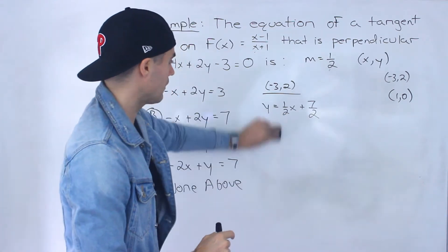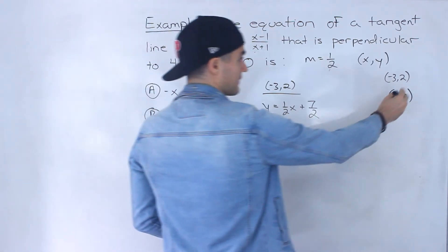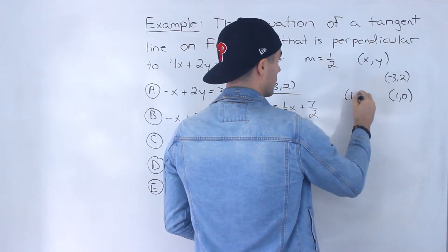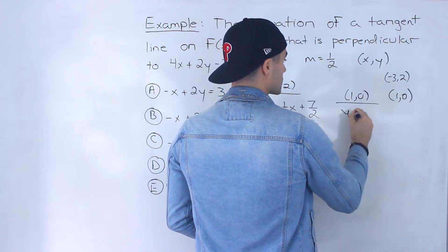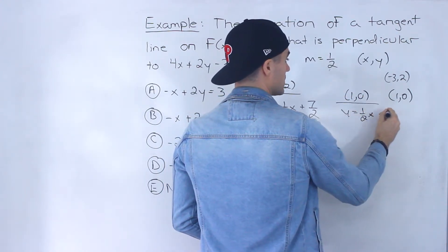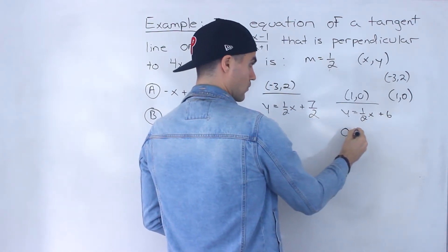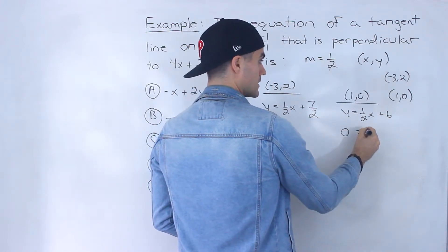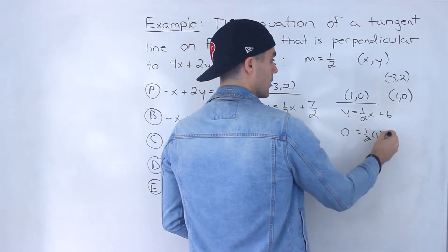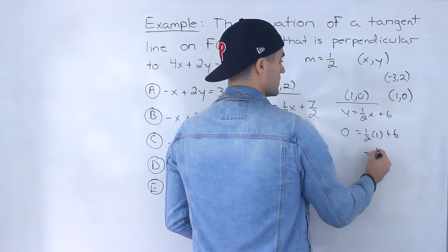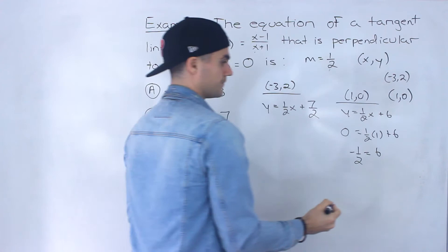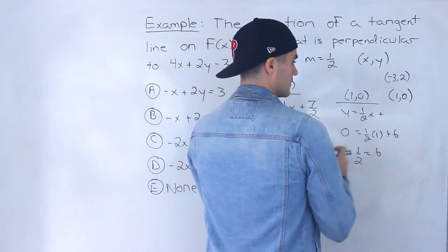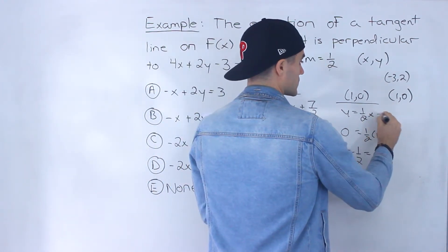For the other equation at the point (1, 0): y equals 1 over 2 x plus b. Plug in 0 for y and 1 for x, so b equals negative 1 over 2. The other tangent equation is y equals 1 over 2 x minus 1 over 2.